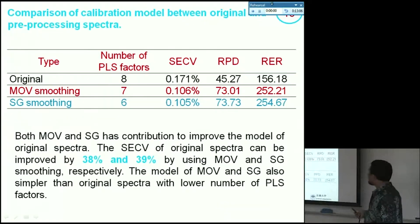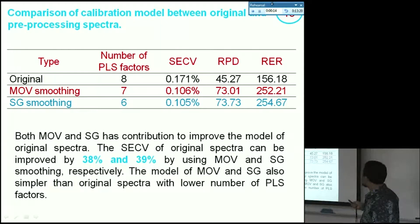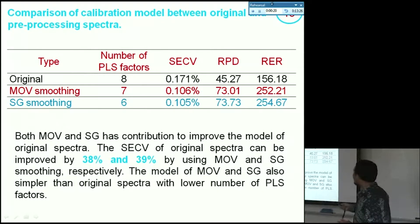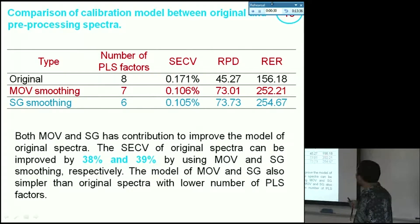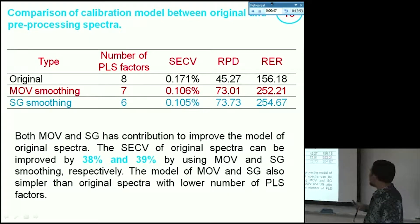This is the comparison of the three models: original, moving average, and Savitzky-Golay. From this table, the number of PLS factors shows the complexity of the model. By using smoothing techniques — moving average and Savitzky-Golay — the complexity is reduced from 8 to 7 to 6. In terms of prediction ability, RPD value, R² value, and SECV are all better than the original. For example, the standard error of cross-validation improved and RPD and R² values increased.